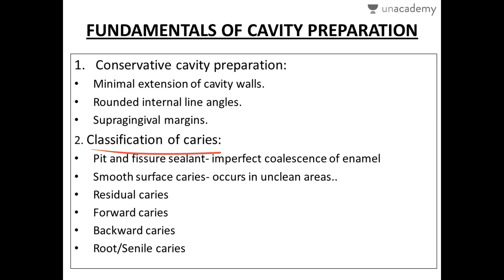Next, classifying caries. Number one is pit and fissure caries. In pit and fissure caries, there is imperfect coalescence of the enamel crystals — the caries process is initiated by the pits, grooves, or fissures of the tooth. It is usually seen in premolars and molars on their occlusal surfaces. From an objective point of view, a triangle is formed and the enamel involvement is always greater than or equal to the dentinal involvement.